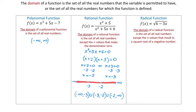So the domain of this rational function represents all the real numbers except negative 3 and negative 2, because these two numbers make the denominator 0.